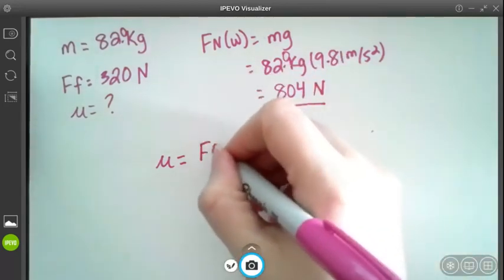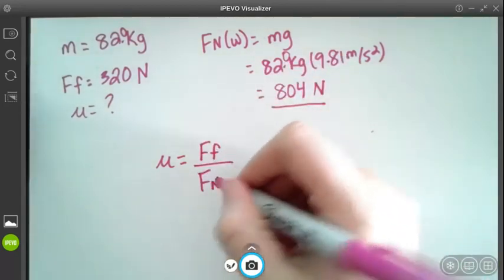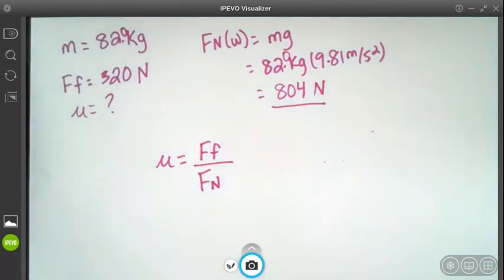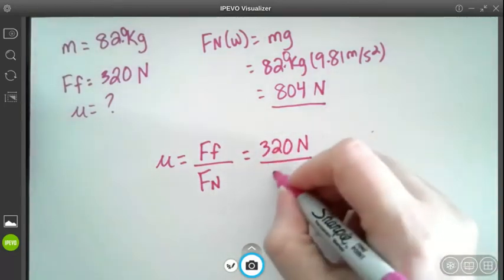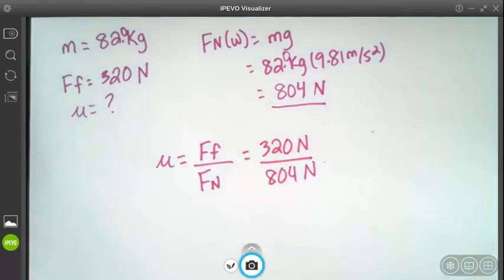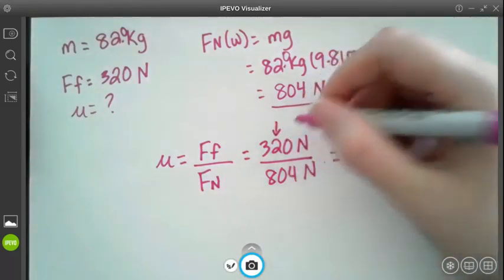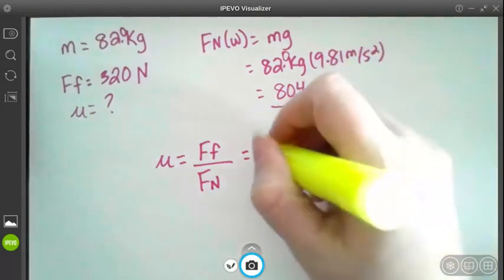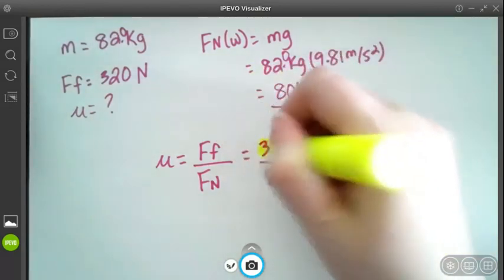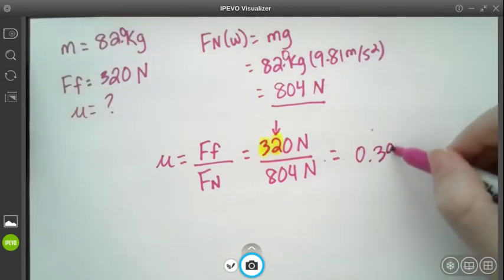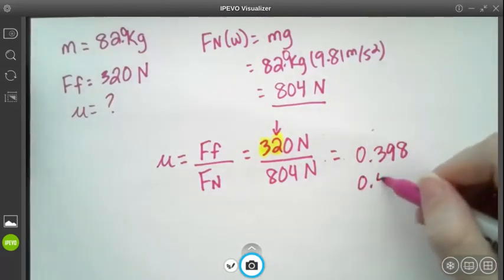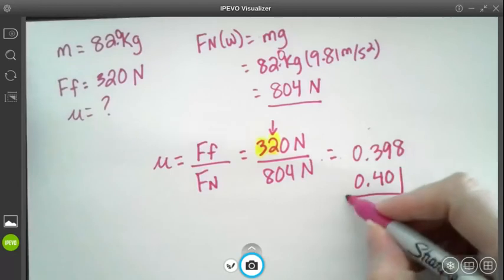So we have both of those values. We have 320 newtons over 804 newtons. I need to have two sig figs. We have a three and a two here and then the zero is not significant because there's no decimal place. So my answer is going to be, this is what it comes out to be. So to make this proper sig figs it'll be 0.40.